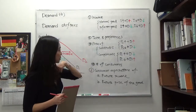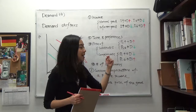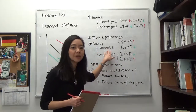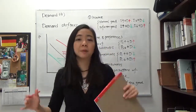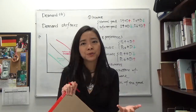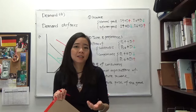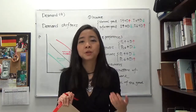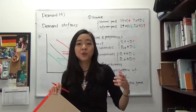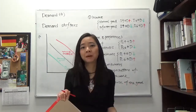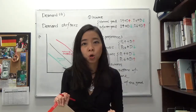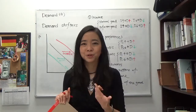The third demand shifter is the price of related goods, and we have two kinds. The first one is substitutes. Substitutes by definition are two goods that compete against each other — either you have one or the other, but not both. For example, Coke and Pepsi are substitutes: if you're having a hamburger, either you have a Coke or a Pepsi, not both. Also think about Kindle and iPad — they're both tablets, so they're substitutes.